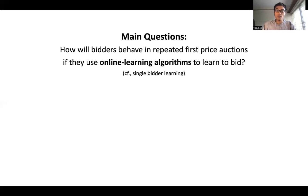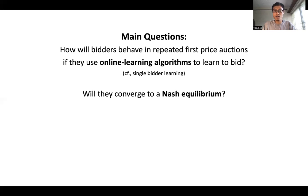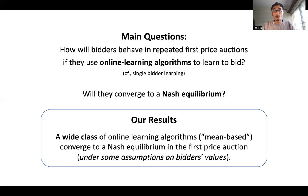The question we want to understand is how bidders will behave in repeated first price auctions if they use online learning algorithms. I want to point out a key difference from previous work: many previous works consider a single bidder learning problem, focusing on one agent and designing a learning algorithm to achieve a no-regret guarantee. Our problem is a multi-agent learning problem — multiple bidders learning simultaneously — and we want to understand what will happen, and specifically whether they will converge to a Nash equilibrium.